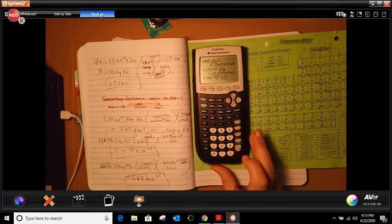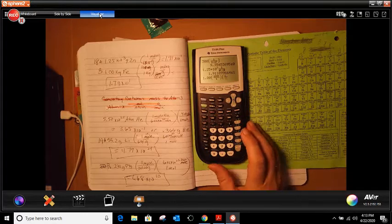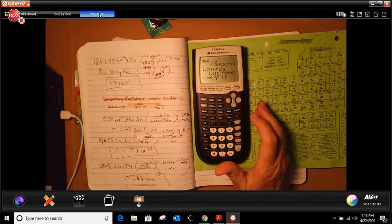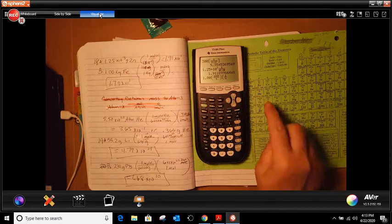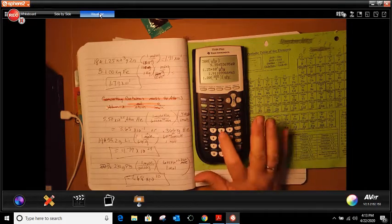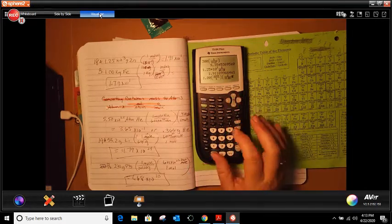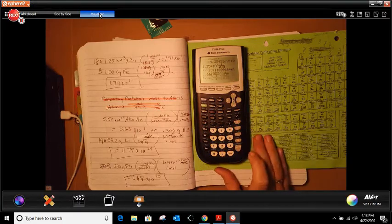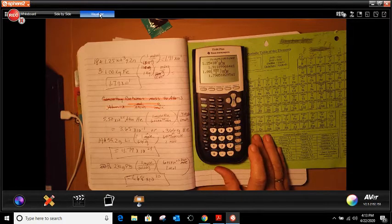I'm going to open my bracket, alpha Y, enter again. And I'm going to do my 1, and then we said that FE was 55.85, close bracket, enter, and I got 1.7 times 10 to the ninth power.